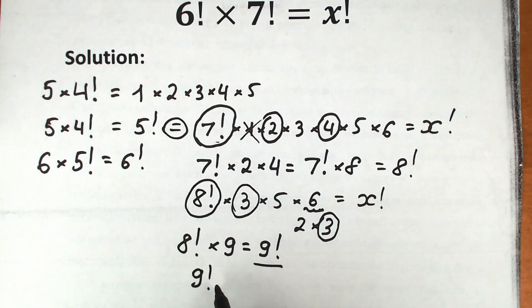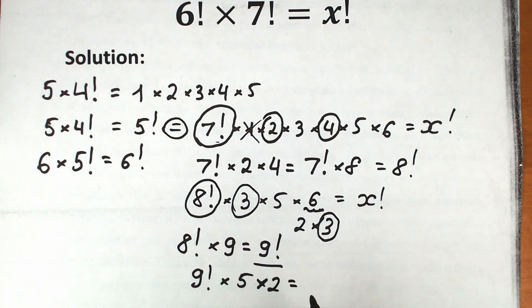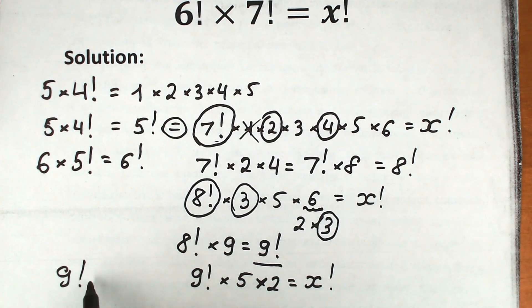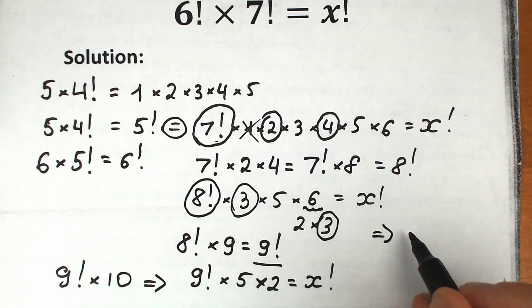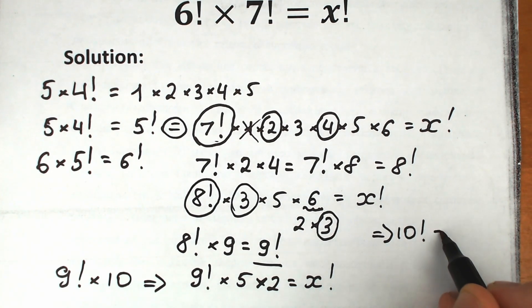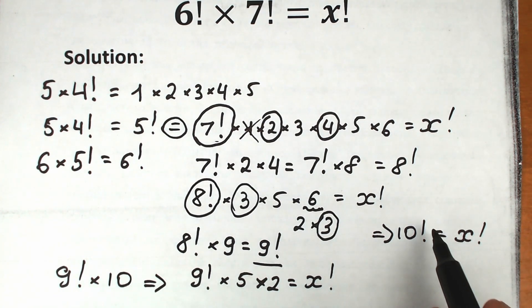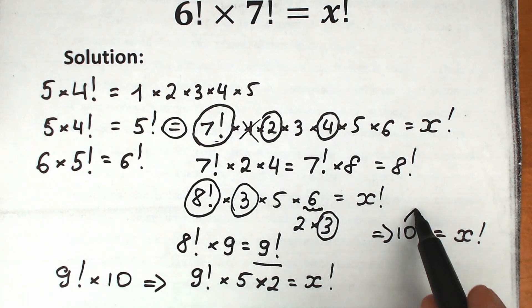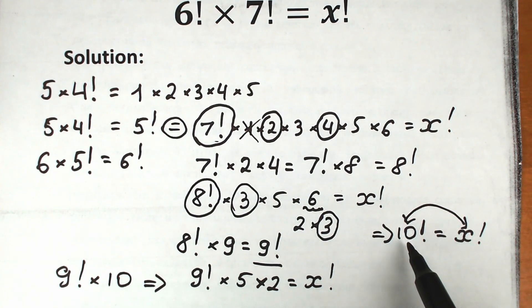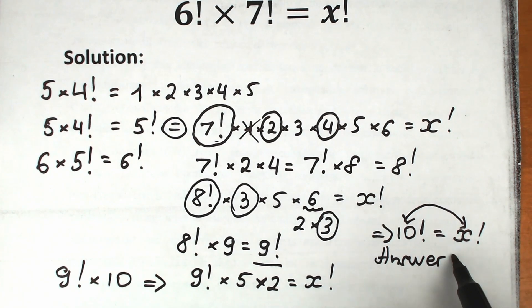Now we have 9 factorial times 5 times 2, equal to x factorial. And this is the classic case: 9 factorial times 10 equals 10 factorial. So we have 10 factorial equal to x factorial, and therefore x equals 10.